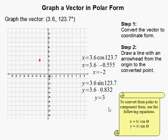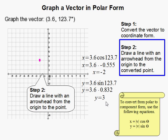Now what you do is you draw a line with an arrowhead from the origin to the point. So I put the point right here, that's negative 2 comma 3, then you draw your arrow.